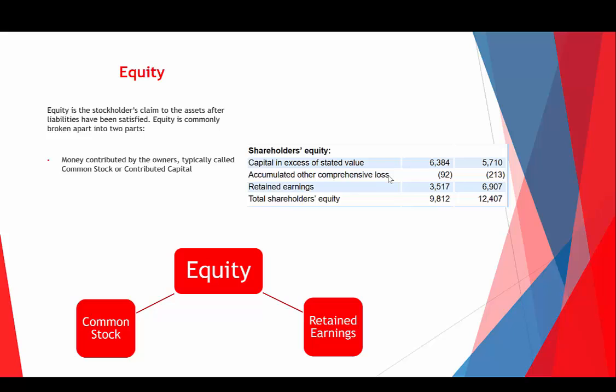The second category, retained earnings, is money that's been earned by the business that hasn't been distributed back to the owners through dividends. It's not like they have all this money sitting in a bank account called retained earnings — it's what they've made that they haven't given out in the form of dividends.